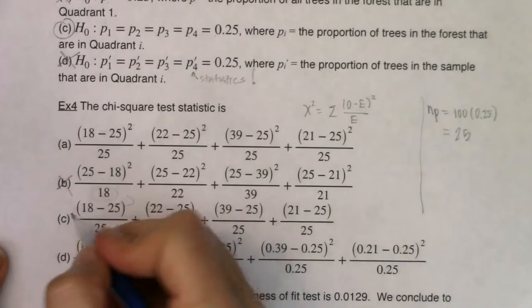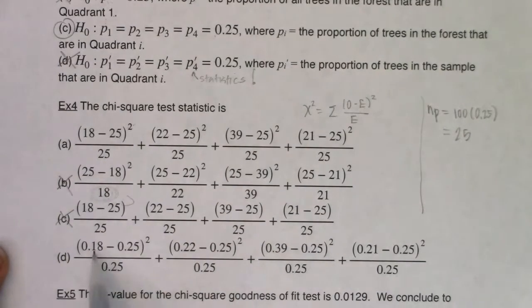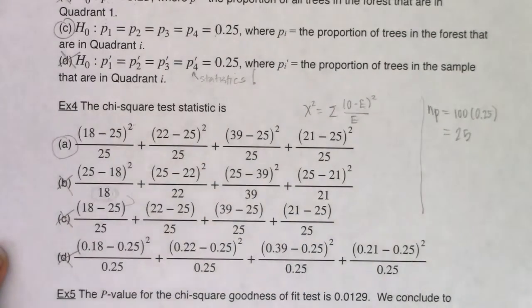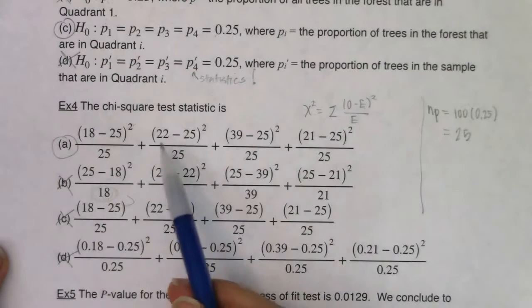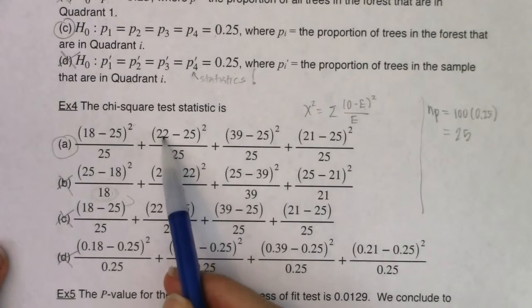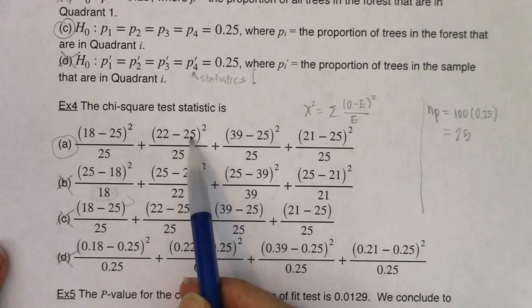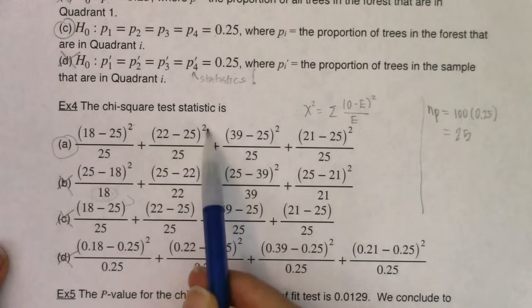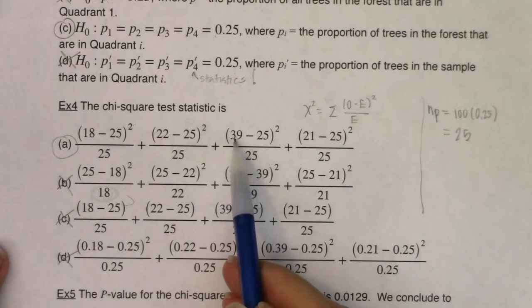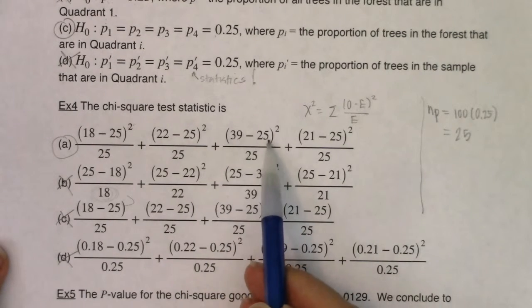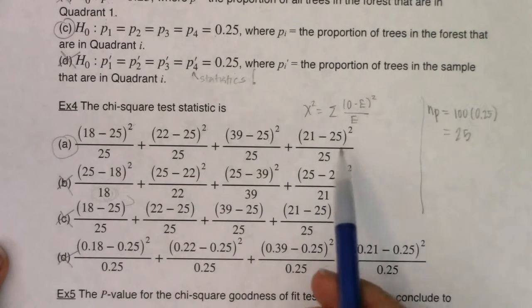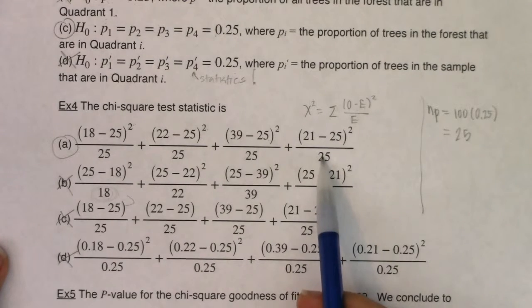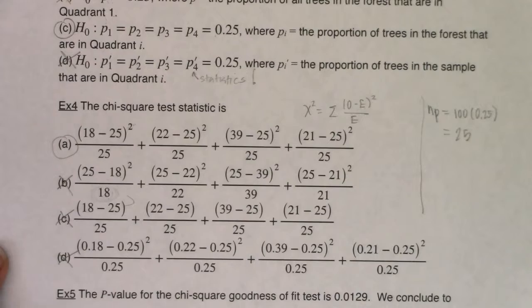This is looking good. Observed minus expected. They didn't square it. That one's out. This, they turned everything into proportions. That's also out. And this one, that was the one I didn't rule out because that was looking pretty good. And let me just go through. Well, in quadrant two, I did observe 25 trees. I expected 25. I might have said that wrong. I observed 22 trees. I expected 25. Square that, divide by 25. In quadrant three, I did observe 39 trees. I expected 25. Take that difference square, divide by 25. And then we had observed minus expected for quadrant four. Square it divided by expected. So that's looking pretty good.